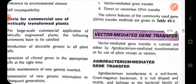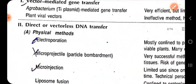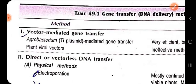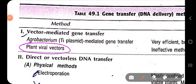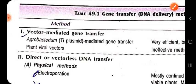That is the first way — agrobacterium mediated gene transfer. The second vector system uses plant viral vectors, like Tobacco Mosaic Virus or Cauliflower Mosaic Virus. These can be used as vectors, but the problem is that viral vectors can carry only a very small amount of DNA as their genome size is very small, so we cannot introduce large genes. Otherwise, plant viral vectors are very efficient once the pathogenic part is removed.